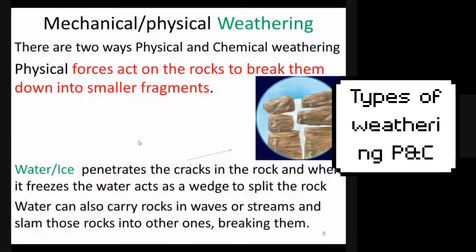We'll start with physical weathering. Physical weathering means breaking rocks without using chemicals — physical forces act on the rocks to break them into smaller fragments. The first type of physical weathering pictured here is ice. Water gets into the cracks of a rock, and when it freezes, the ice expands because it takes up more volume than the original water. That expansion can push further cracks or make existing cracks bigger in the rock. This is often called ice wedging.